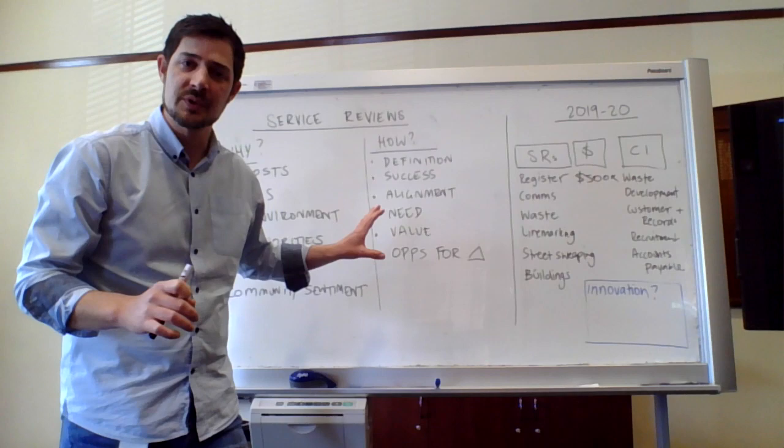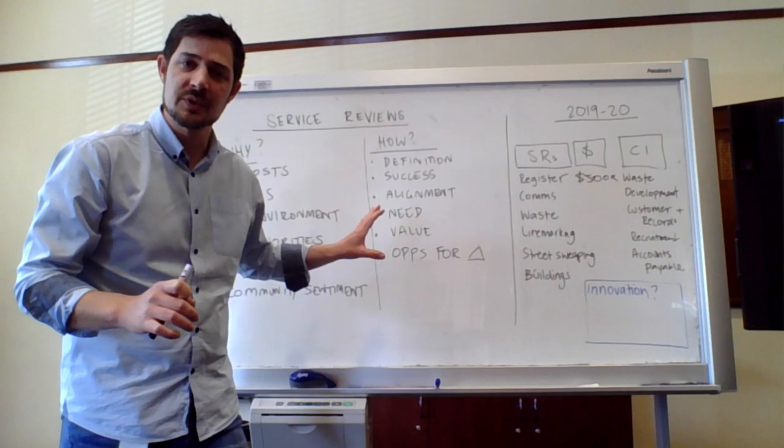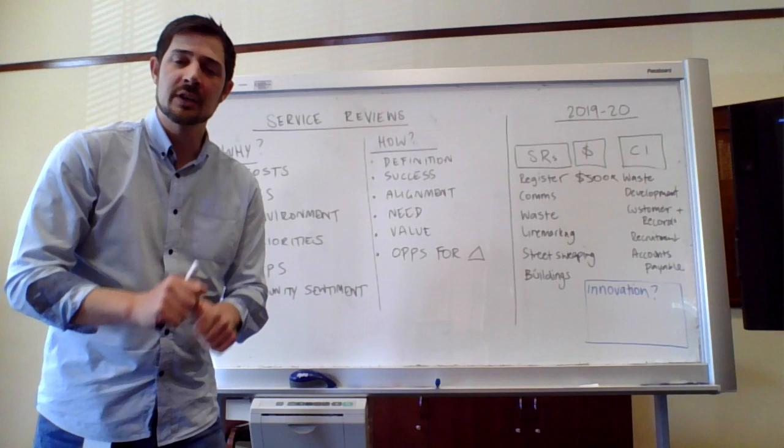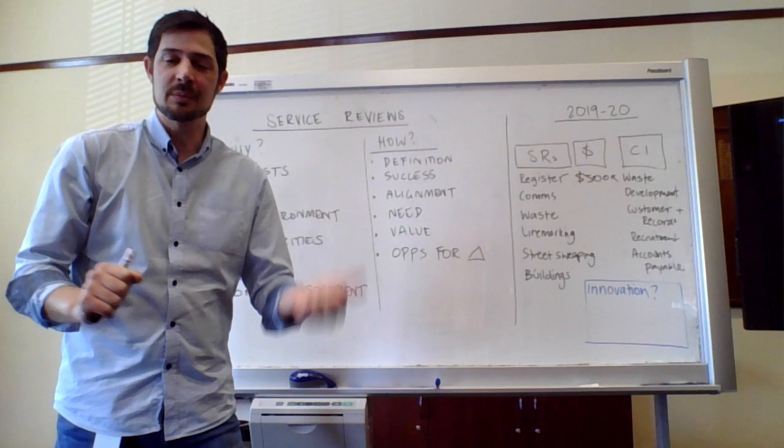When we go about the review, these are the types of things we hope to achieve. We want a really defined service: what we're doing, how we're doing it, how many people are working on it, what's it costing, what are the measures of success, what does success look like, are we tracking this, are we performing, are we reporting.